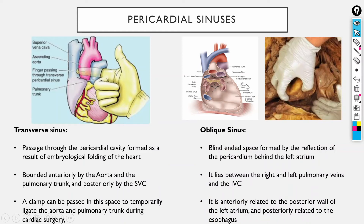Spaces created by the pericardium are called pericardial sinuses, best appreciated in cadavers. The first and more important one is the transverse sinus — a passageway created during embryological folding of the heart. It is bounded anteriorly by the ascending aorta and the pulmonary trunk, and posteriorly by the superior vena cava. You can insert a finger between those structures to reach the transverse sinus. During cardiac surgery, you can ligate these vessels to stop heart function and perform surgery.